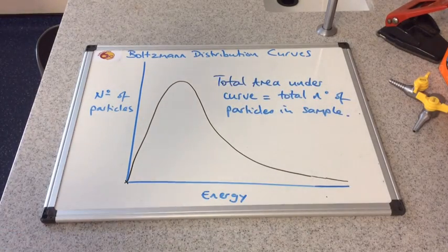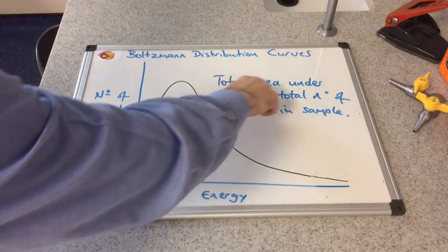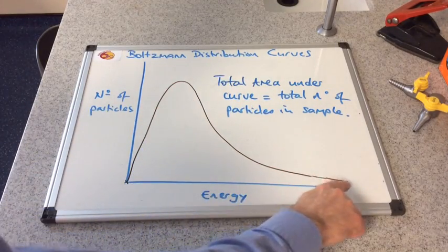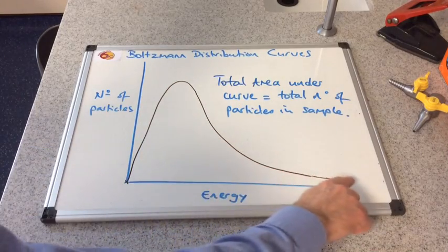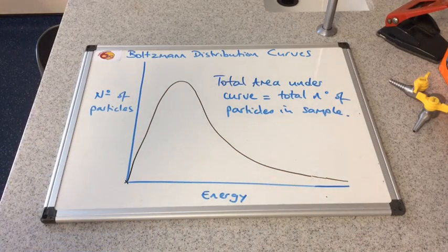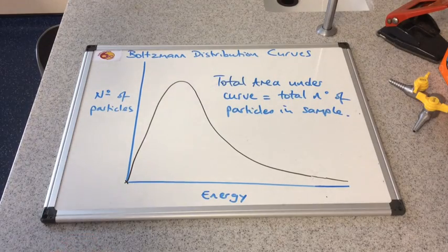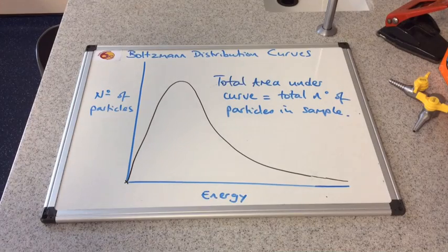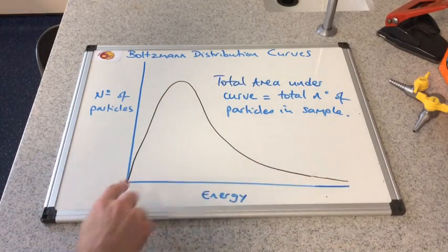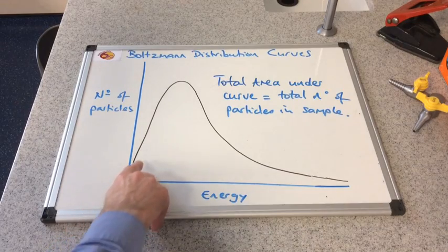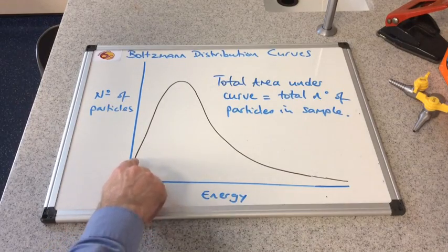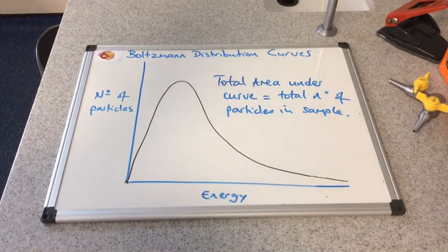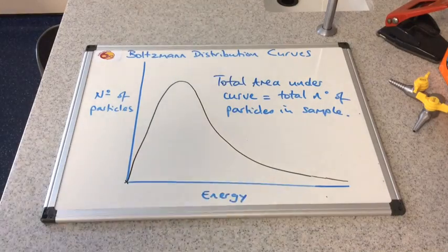And the only other thing to mention at this point is that the total area under the curve—now don't panic, you won't have to calculate the area—the total area under the curve is the total number of particles in the sample. So if you've got a mole of a gas, you would have Avogadro's number of particles in the sample: none with no energy, a few with small energies, most of them with medium energies, and a few with high energies. But remember, we mustn't cross that x-axis.